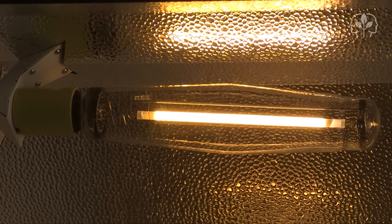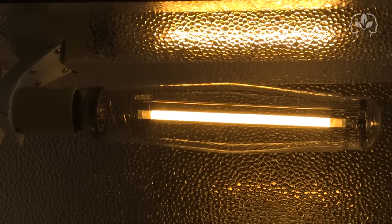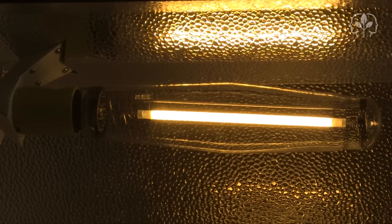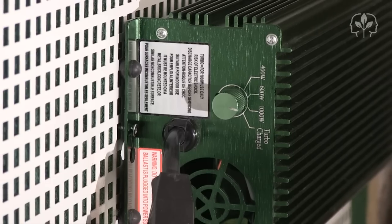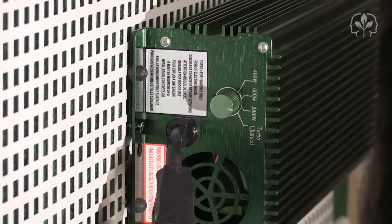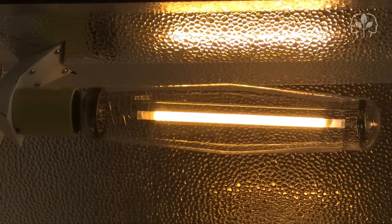Our number one priority here is to create a safe indoor garden. Now, you probably already know that an HID grow light requires a special box, called the ballast, in order to operate. This ballast generates both the high inductive electrical load to ignite the lamp and a steady flow of electricity to the lamp once it's lit up.